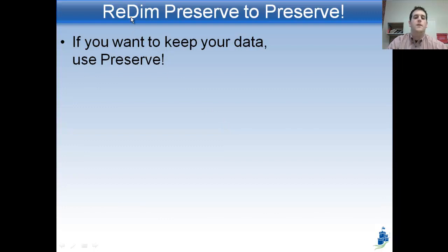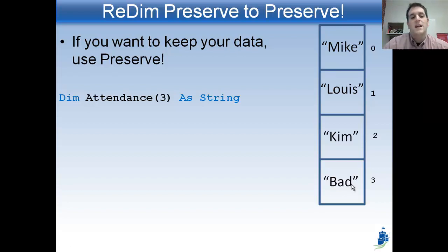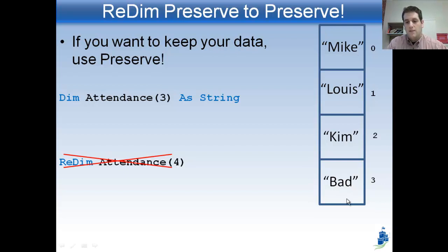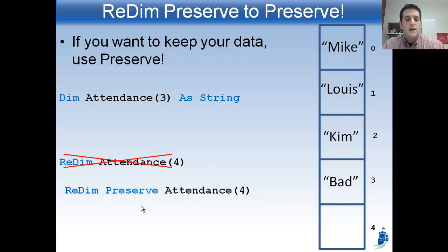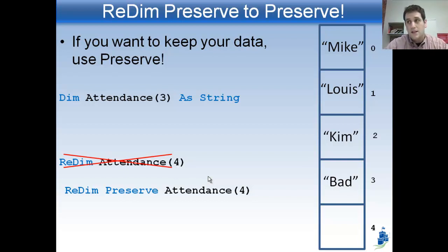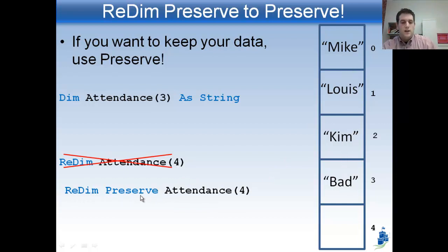There's a way around that: if we want to keep the data, we use ReDim Preserve. Instead of just saying ReDim Attendance(4), I say ReDim Preserve Attendance(4), and that keeps all my stuff in there and adds another box. Now, ReDim Preserve is a particularly expensive thing to do — not easy for the computer. If you have 10,000 elements in the array, it might take a millisecond. So if there's some way to figure out how big your array should be beforehand, you should try to do it. But ReDim Preserve will certainly work — it changes the size of the array and keeps the existing data without destroying it.